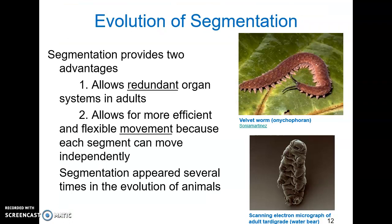Finally, we can look at segmentation. Many animals are segmented, meaning there is a series of linearly arranged compartments that are all identical to each other. There are two advantages of segmentation: number one, redundant organ systems in adults, so if one or a few segments are damaged, that's not fatal; and number two, more efficient and flexible movement, because each segment can contract and expand independently and move against other segments. Segmentation seems to have evolved several times in the evolution of animals — in annelid worms, velvet worms, water bears, and mud dragons — popping up repeatedly because of its advantages.